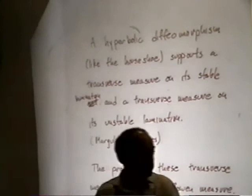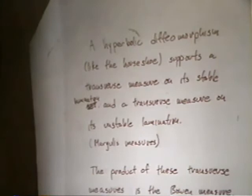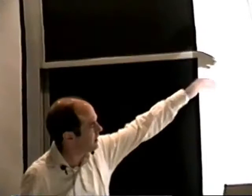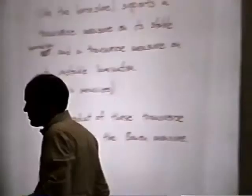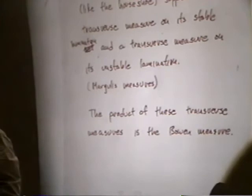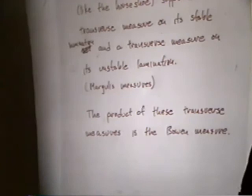For hyperbolic diffeomorphisms, like the horseshoe, there are natural transverse measures — there is a stable and an unstable transverse measure: a transverse measure for the unstable lamination and a transverse measure for the stable lamination. These are often called Margulis measures. They exist very generally for hyperbolic systems and have a number of nice properties.